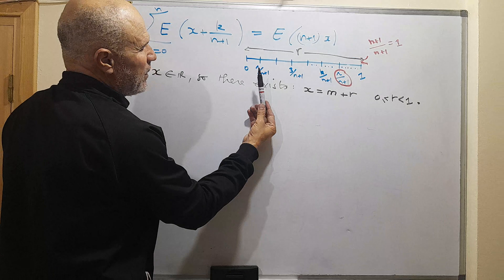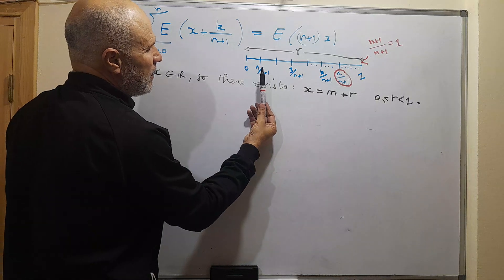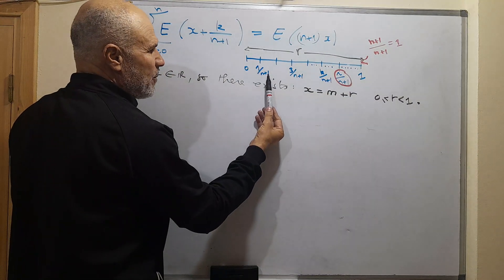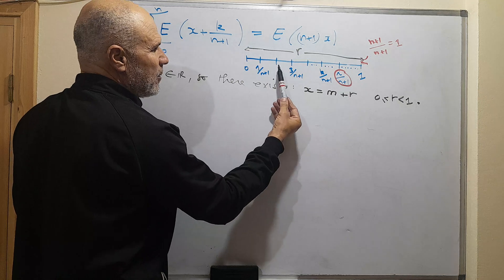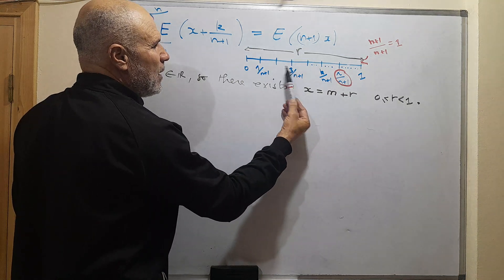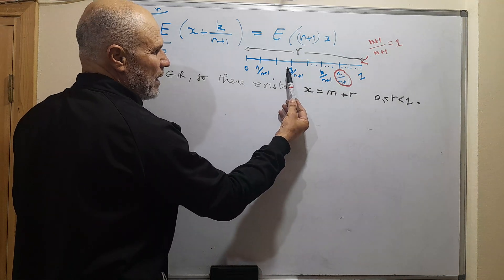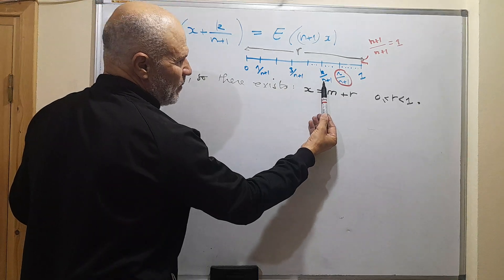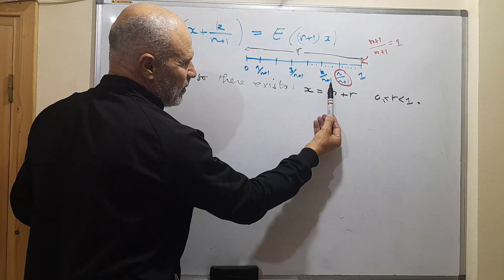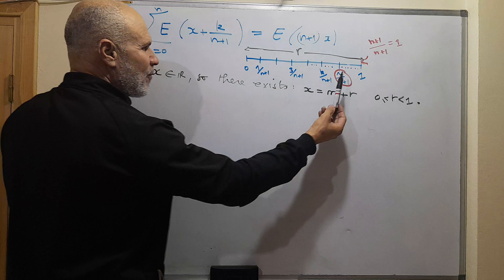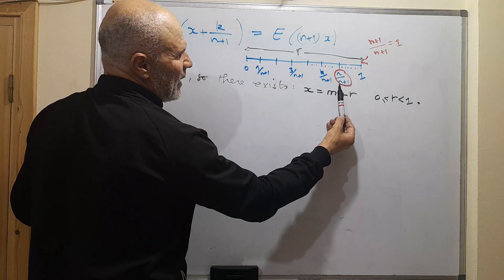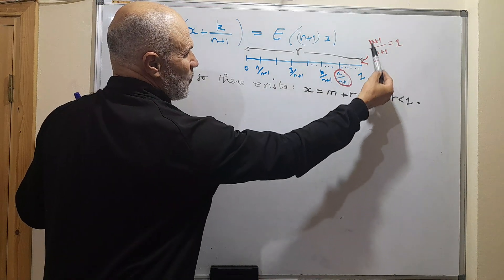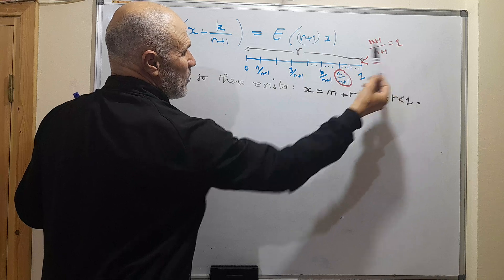We divide the interval [0, 1) into subintervals of width 1/(n+1): from 0 to 1/(n+1), then 2/(n+1), 3/(n+1), and so on up to k/(n+1), e/(n+1), all the way to (n+1)/(n+1) which equals 1.